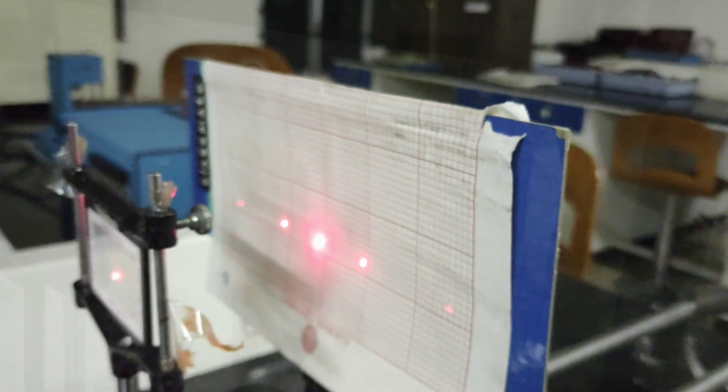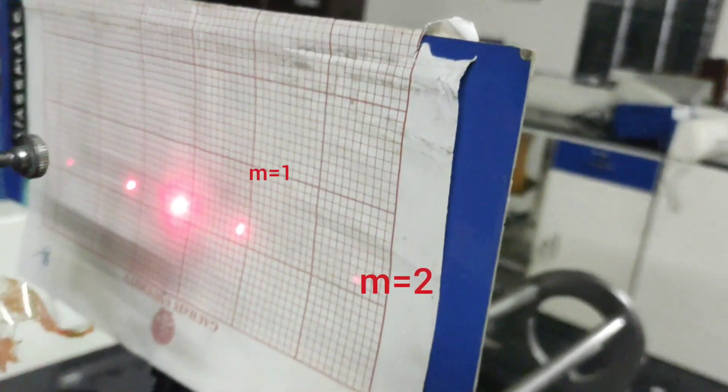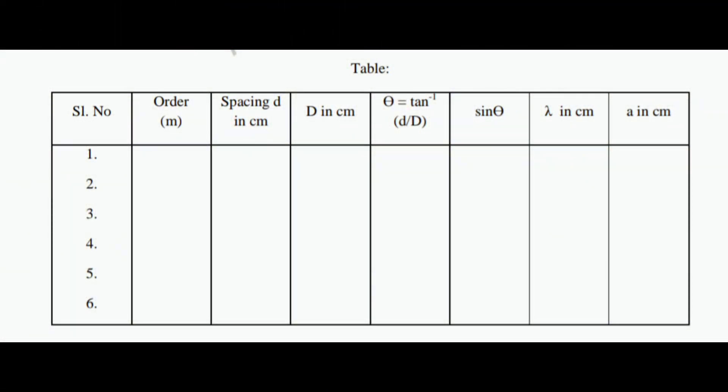We should take care of converting inches into centimeters as all other measurements are done in centimeters. m is the order of the diffraction pattern where m = 1 is for the first order and 2 is for the second order as seen in the table.